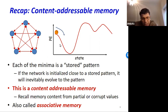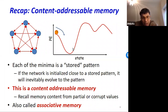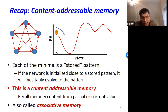These local minima represent stored patterns — content-addressable memories, also called associative memories. You initialize the network with a pattern that somewhat resembles a stored pattern and the network will evolve and recall it. This is very analogous to biological memory, which is in fact where this model initially came from.